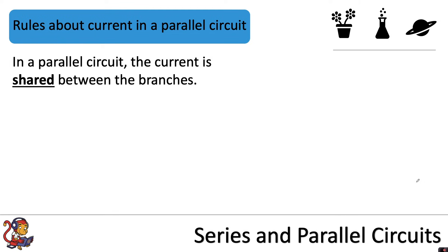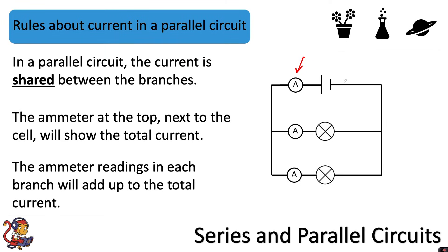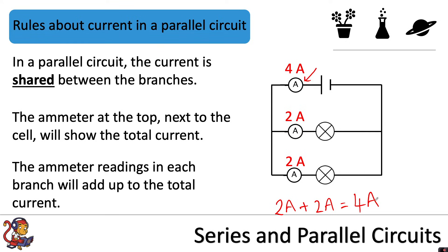In a parallel circuit the current is shared between the branches. The ammeter at the top next to the cell will show the total current, and the ammeter readings in each branch will add up to the total. So if the total current was 4 amps measured next to the cell, and we've got the same component in each branch, we'd expect 2 amps through the first branch and 2 amps through the second — 2 plus 2 equals the total of 4 amps.